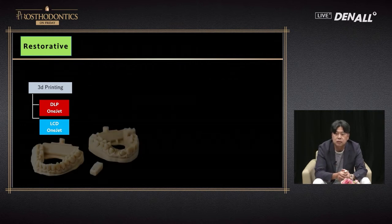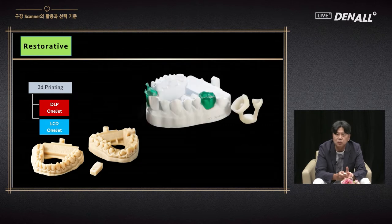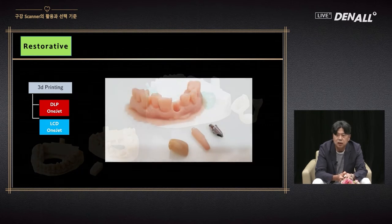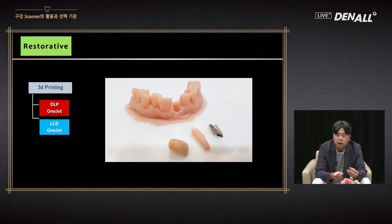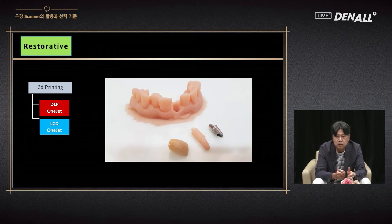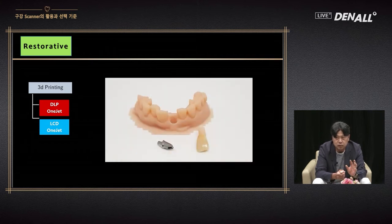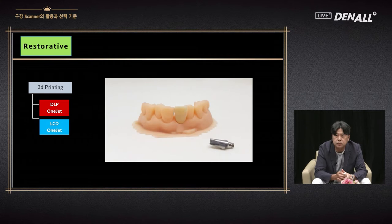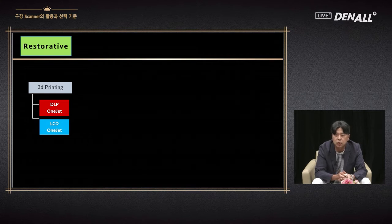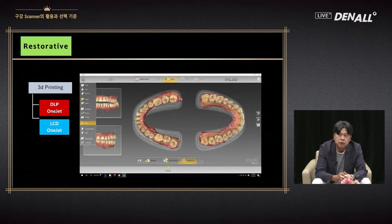All of this starts with scanning using the intraoral scanner. The tray is made using the digital image, a model can be made, and a crown or pattern can be fabricated. The custom abutment and zirconia crown which will be put on an implant are scanned using the intraoral scanner, and using software a model is made.